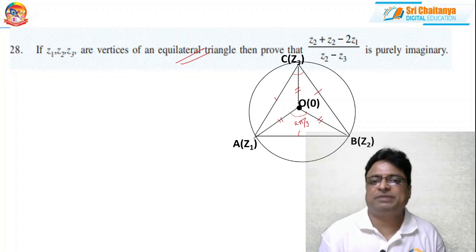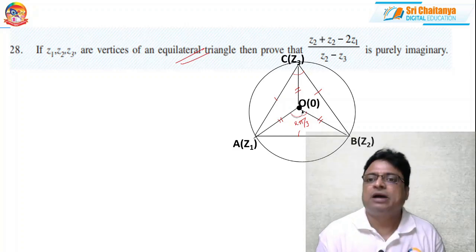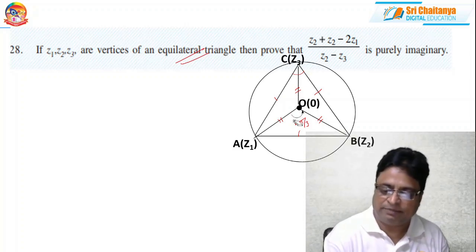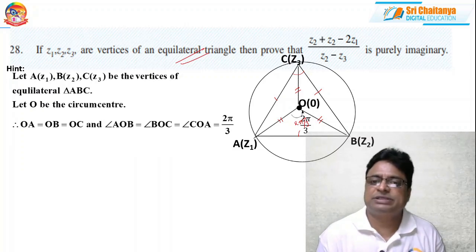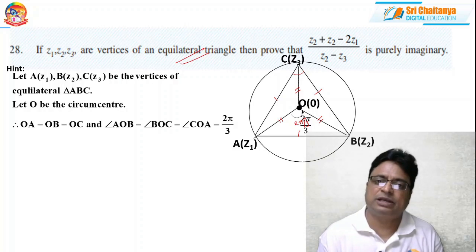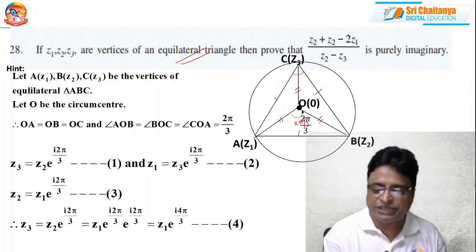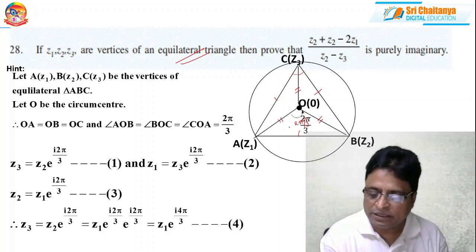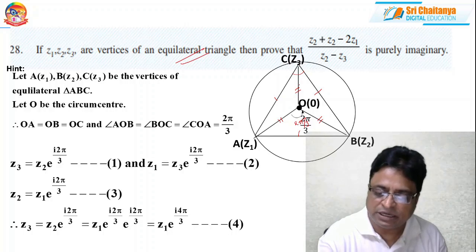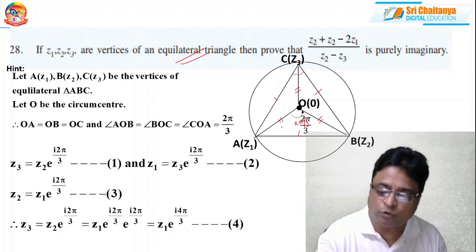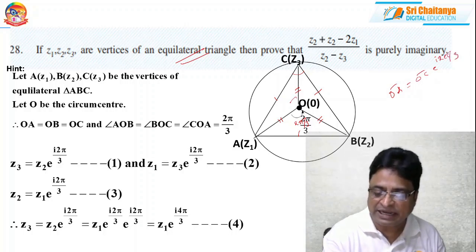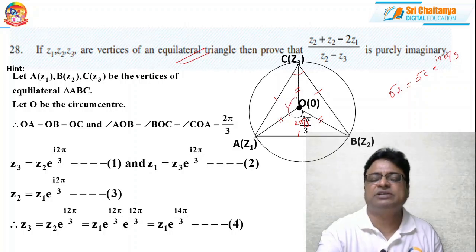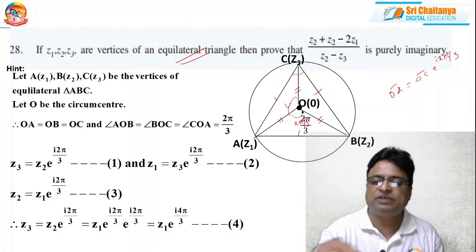Here I am applying the rotation method. So OA equals OB equals OC, and angle AOB equals angle BOC equals angle COA equals 2 pi by 3. So Z3 equals — if I have shifted OC by 120 degrees to OA, therefore OA-bar equals OC-bar times e^(i·2pi/3). It is very easy because it is in the anticlockwise direction. If it is anticlockwise, the angle is written as e^(iθ); if it is clockwise, I write e^(−iθ).